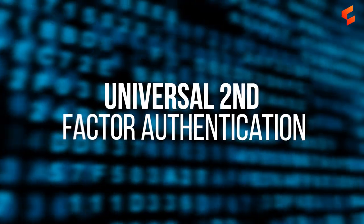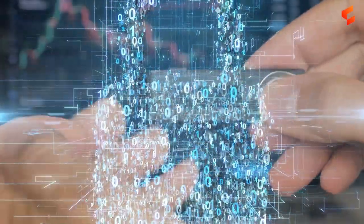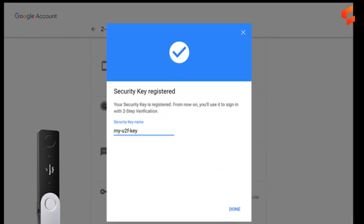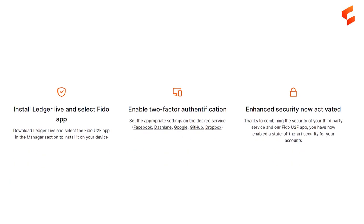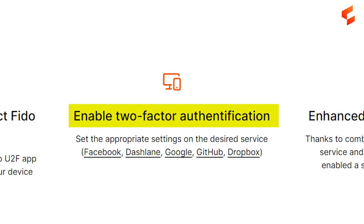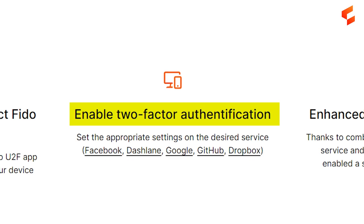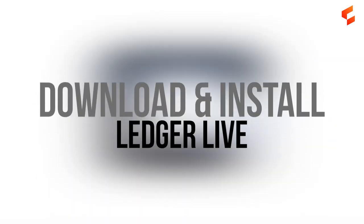Since Ledger hardware wallets are secure ways to store private keys, the Ledger Live software can be configured to function as a multi-factor authentication (MFA) device. When you have MFA enabled, it becomes harder for people to pretend to be you. People choose to enable multi-factor authentication for accounts that are very important — examples include emails, social media accounts, mobile phones, bank accounts, and crypto exchanges.